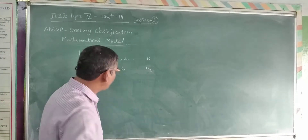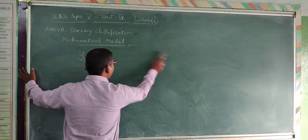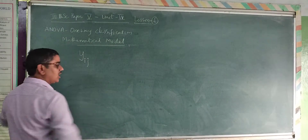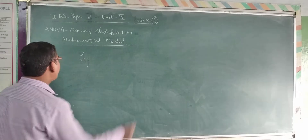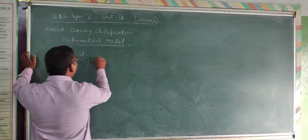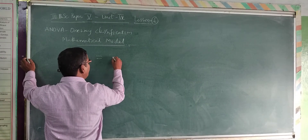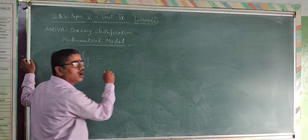Now I consider the linear mathematical model for Y_ij in two particular effects: one is μ_i, and the other is due to chance. I have considered these two particular factors.